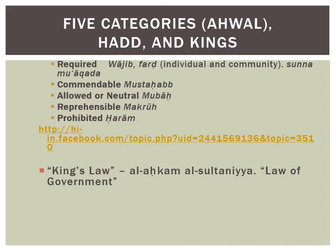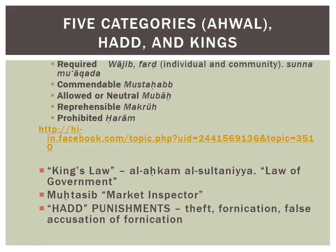Parallel to the development of Islamic law, there was something called al-Ahkam al-Sultaniyya, the law of government. The most important collection of government law in early times was by al-Mawardi. There was a market inspector, al-Muhtasib, who was charged with keeping weights and measures standard and making sure that people in the economic marketplace were treated fairly. Five items are typically listed as hadd punishments because they have very specific punishments given for them: theft, fornication, and the false accusation of fornication being some of them.